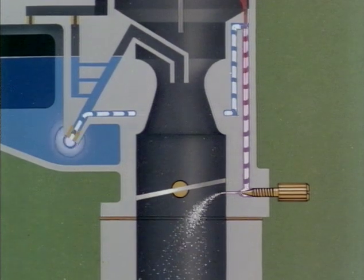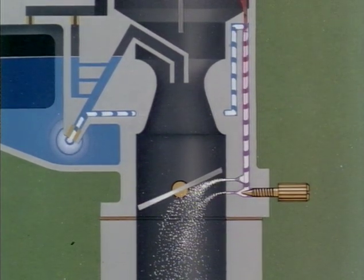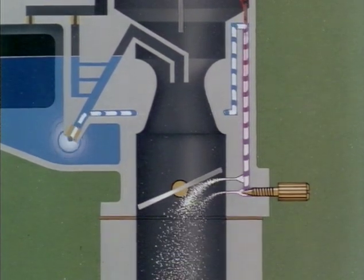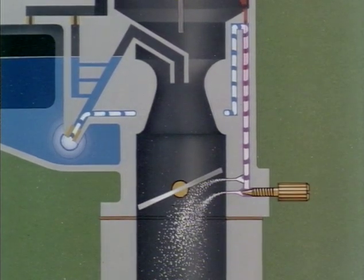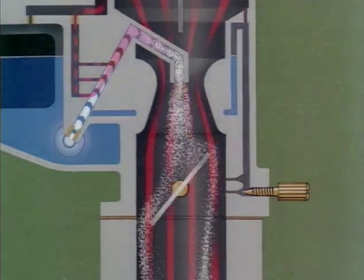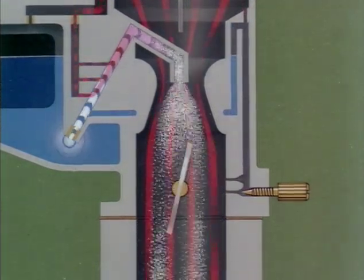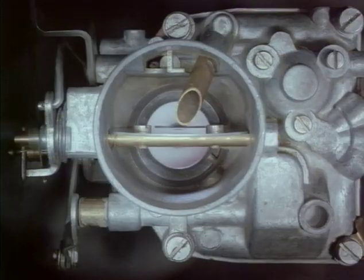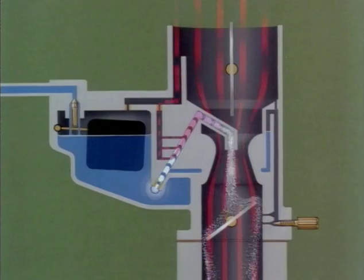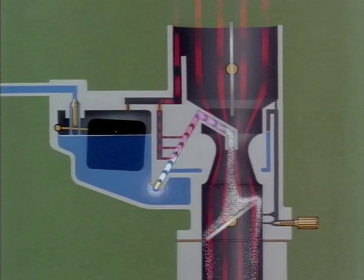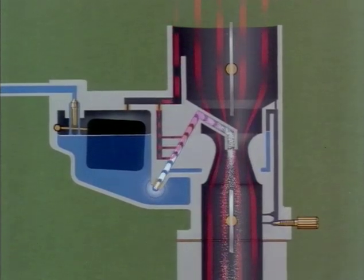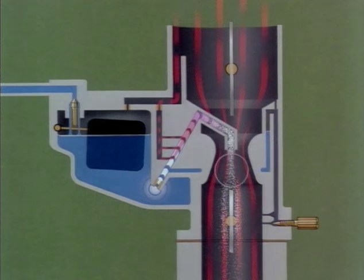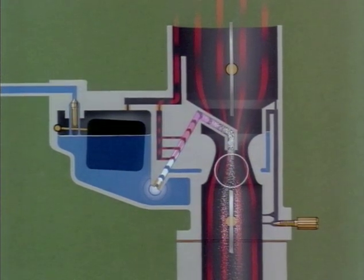In normal acceleration, a progression jet provides more petrol until the main jet takes over. Sudden throttle opening provides more air, but weakens the mixture. There is a lag whilst extra fuel is drawn into the venturi to meet the new conditions.